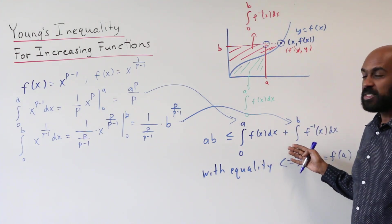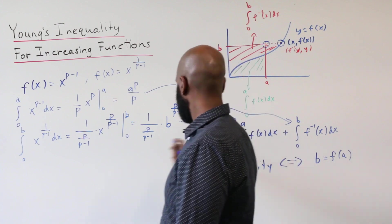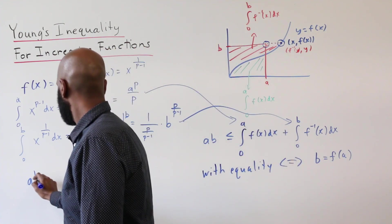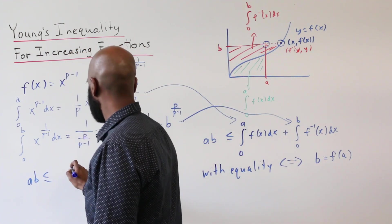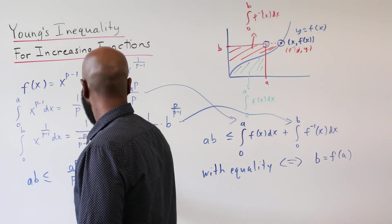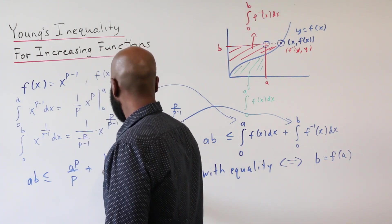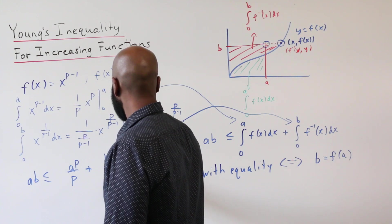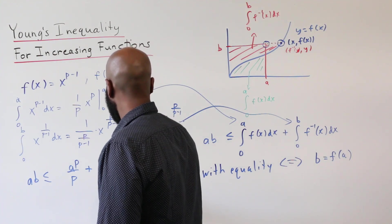So Young's inequality for increasing functions then tells us that AB is less than or equal to A to the p over p plus B to the p over p minus 1 over p over p minus 1.